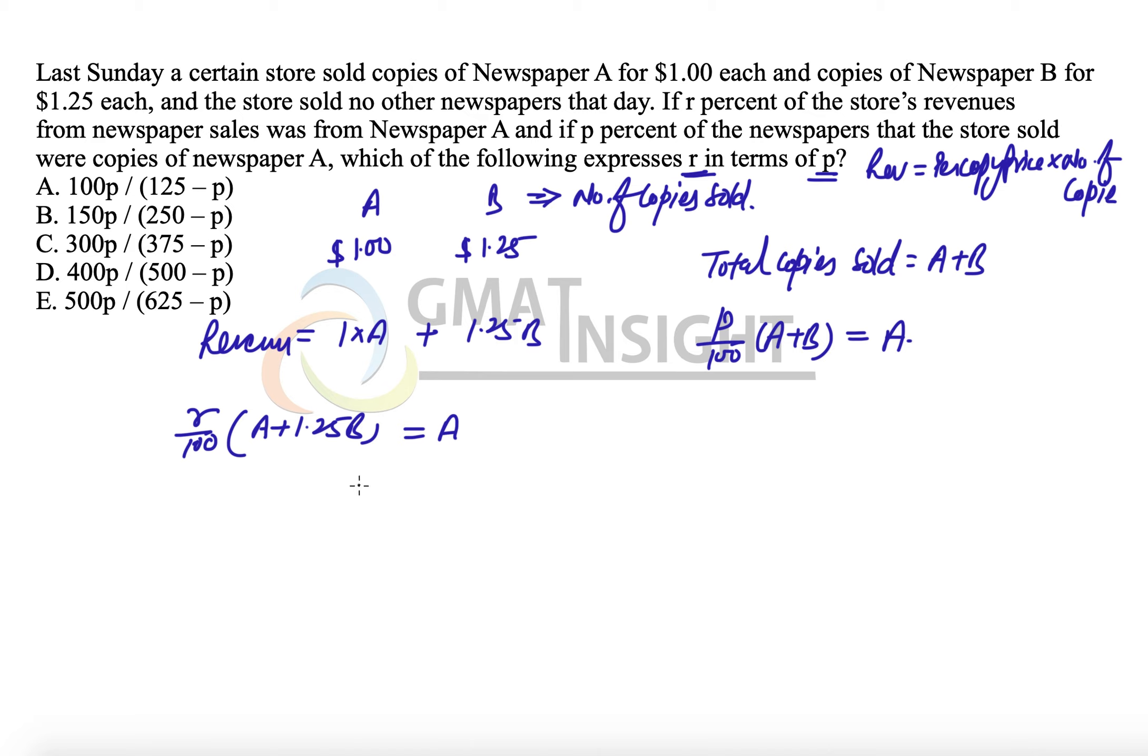I'm bringing this A to the left side. That means A divided by A plus 1.25B divided by A equals 100 over R. Similarly, A divided by A plus B divided by A equals 100 over P.